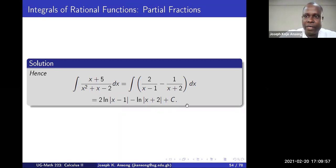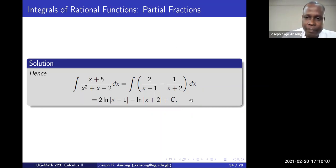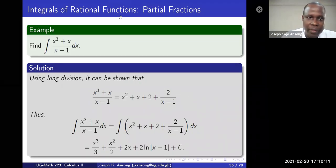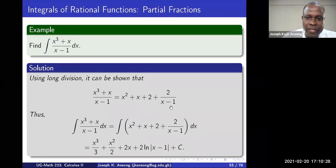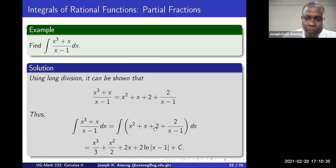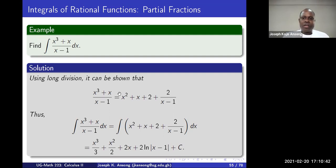Remind yourselves of partial fractions, completing the square, and all of those techniques. Here is the case where the power of the numerator is greater than that of the denominator, so perform a long division. For this expression, long division gives x² + x + 2 + 2 over (x - 1). Integrating term by term gives x³/3 + x²/2 + 2x + 2 ln|x - 1| + C.